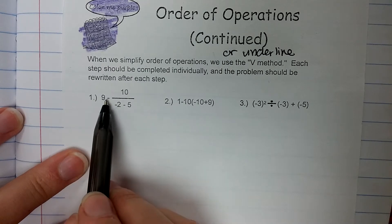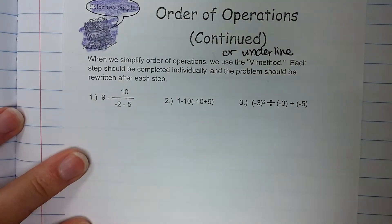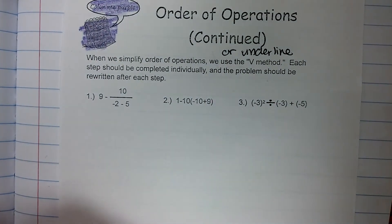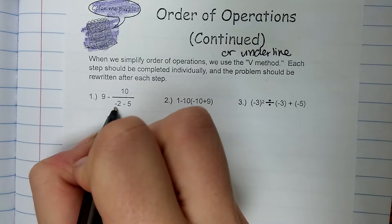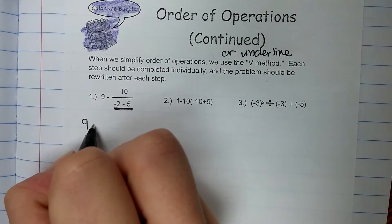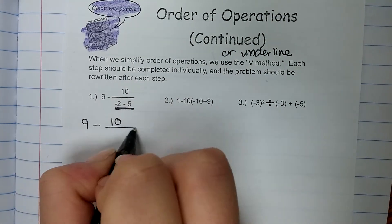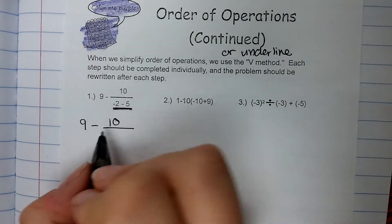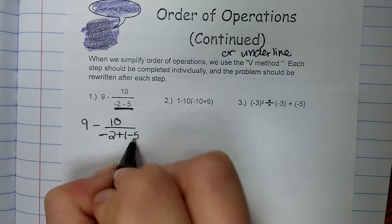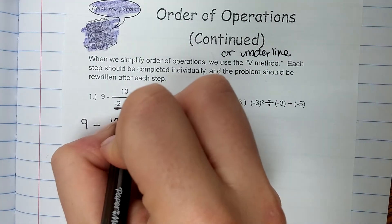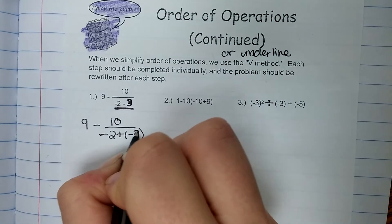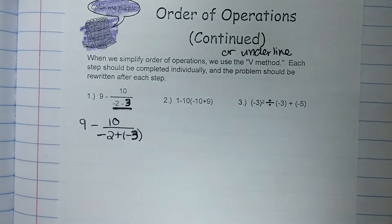All right, so example number one, we have 9 minus 10 over negative 2 minus 5. Our first step is going to be this division bar because it acts like a grouping symbol. So we need to do the 2 minus 5 first, and I'm going to underline that so I know that's what I'm working with. So this is 9 minus 10 over negative 2 minus 5. We can use KCO and rewrite that as negative 2 plus negative 5. And actually, we're going to change this number to a 3 to make this problem a little bit easier. There we go. That should be a 3.